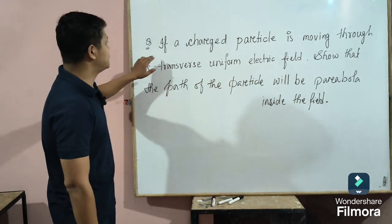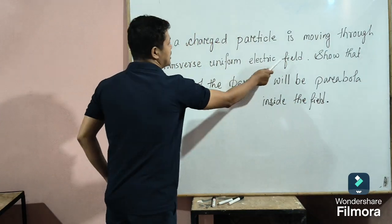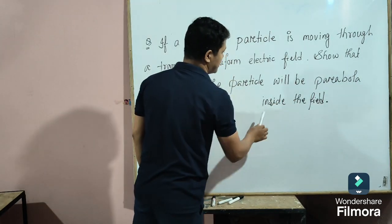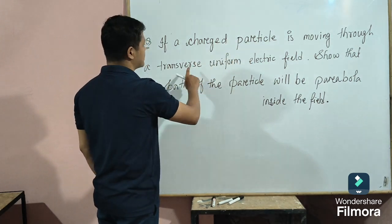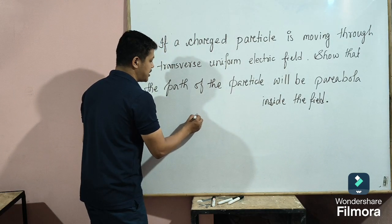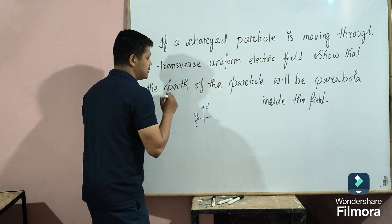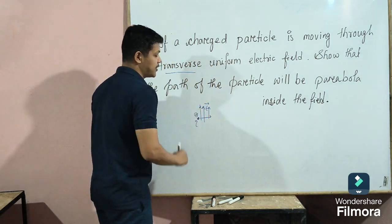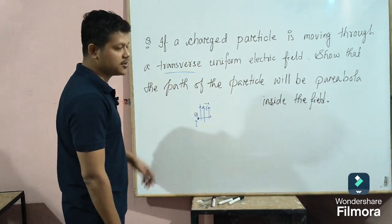So what is the question here? If a charged particle is moving through a transverse uniform electric field, then the path of that particle will be a parabola inside the field. A charged particle moving through a transverse uniform electric field means the direction of motion of the charged particle is perpendicular to the direction of the electric field. The electric field is uniform — not variable in this case.